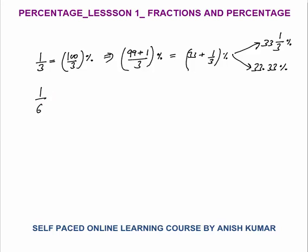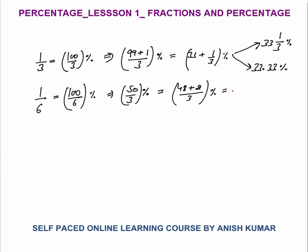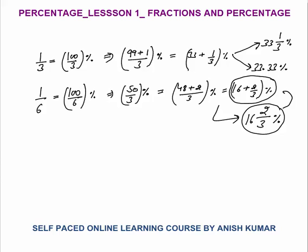One by 6 equals 100 by 6 percent, which simplifies to 50 by 3 percent. Since 50 is not divisible by 3, write it as 48 plus 2 by 3, giving 16 plus 2 by 3 percent. This can be written as the mixed fraction 16 and 2/3 percent, or 16.66 percent — both are the same.